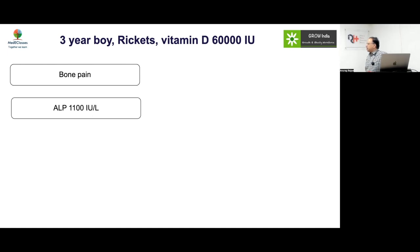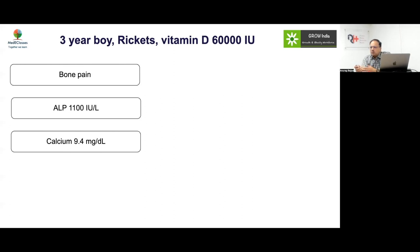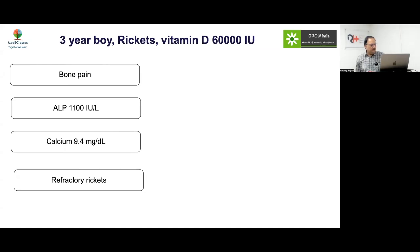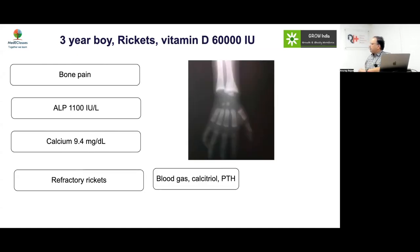This child had been given vitamin D 60,000 IU and complained of bone pain and high alkaline phosphatase. Based on these findings the clinical team suspected refractory rickets, but bone pain and elevated alkaline phosphatase are actually physiological responses to vitamin D treatment and do not indicate refractory rickets. The key finding to look for is the line of healing.